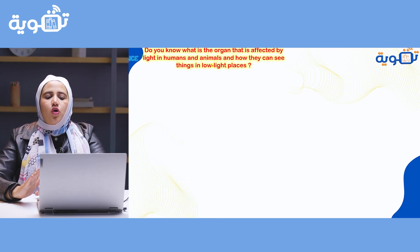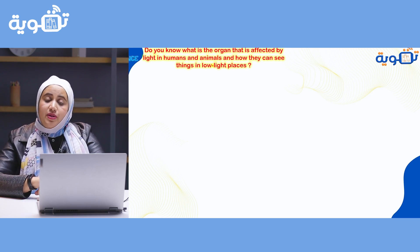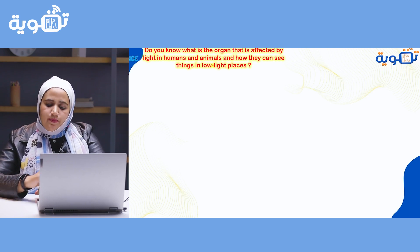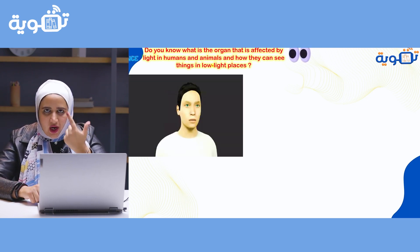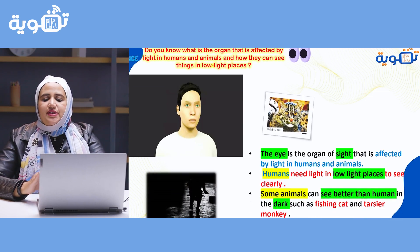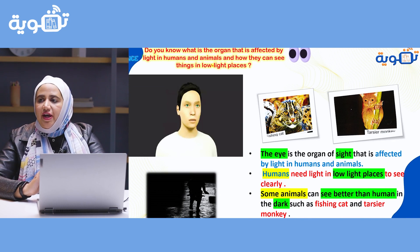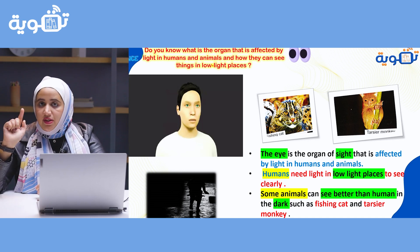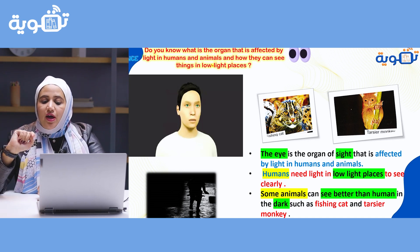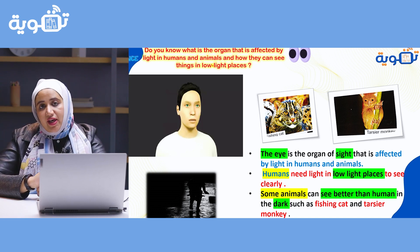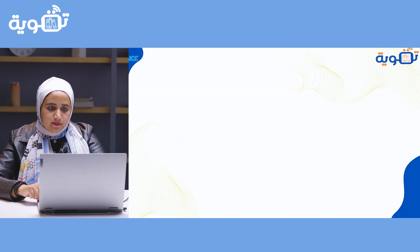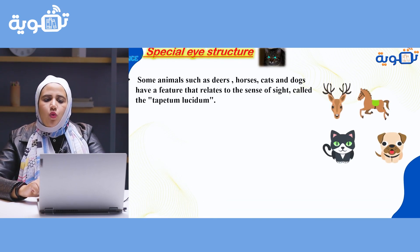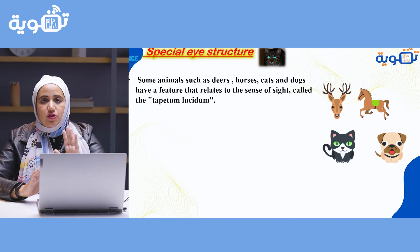Do you know what is the organ that is affected by light in humans and animals, especially in low light places? Of course — our eyes. The eye is the organ of sight that is affected by light in humans and animals. Humans need light to see in low light places. But some animals have the ability to see at night — they can see better at night than humans, like the fishing cat and tarsier monkey.